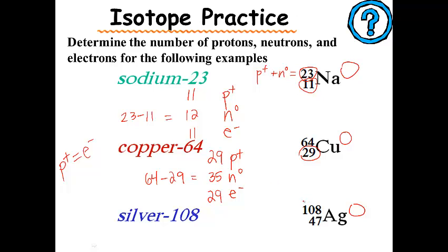Lastly, for silver, same idea here, the number of protons is 47, same as the number of electrons. The difference between 108 and 47, in this case, is 61, and that's how you would do this.